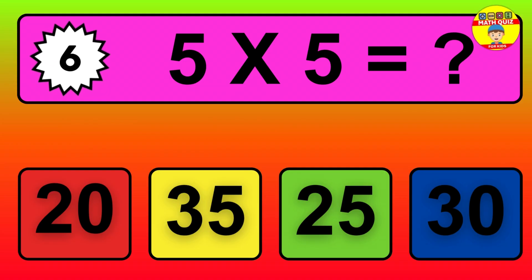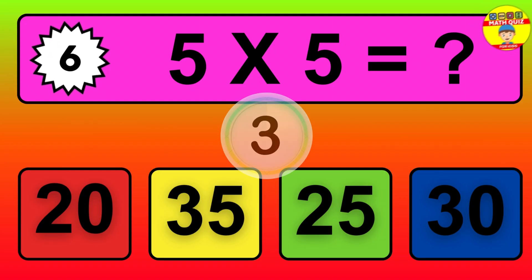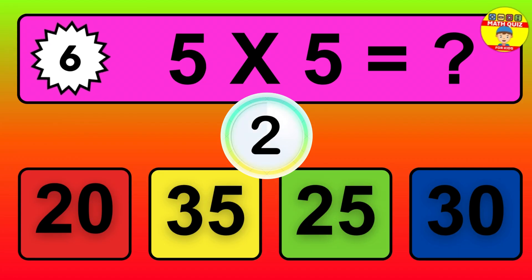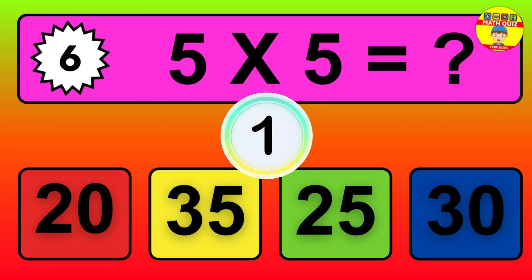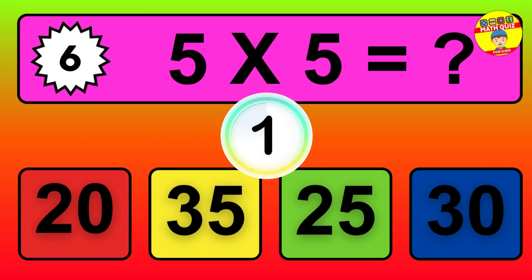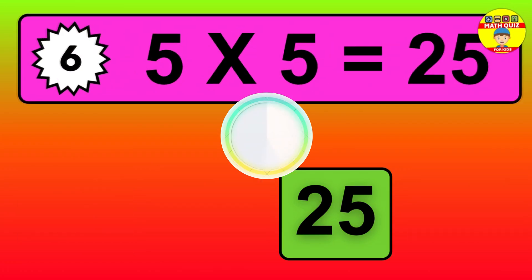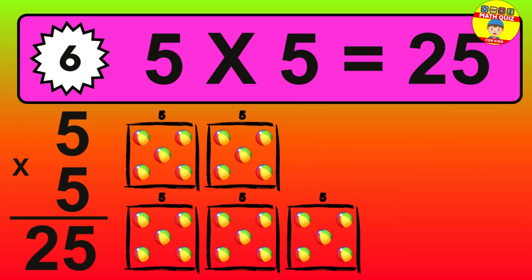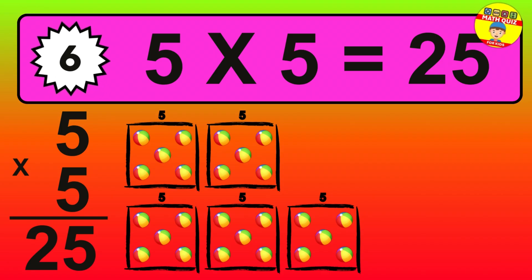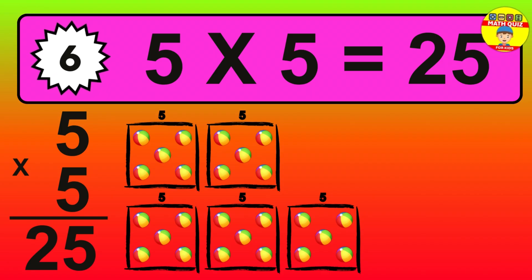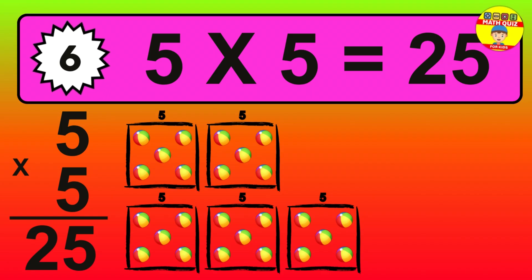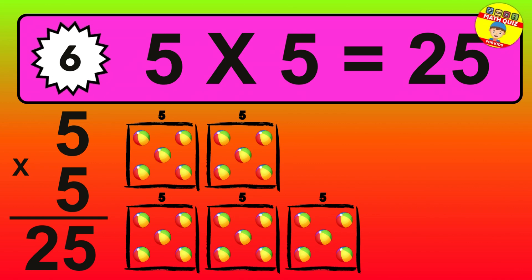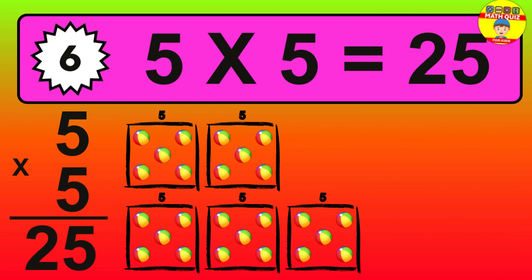Question 6. 5 times 5 equals what? The answer is 5 times 5 is 25. To calculate, we have 5 groups with 5 balls each one. So, how many balls do we have? 25 balls.